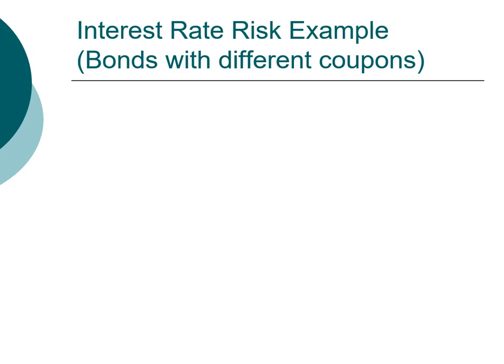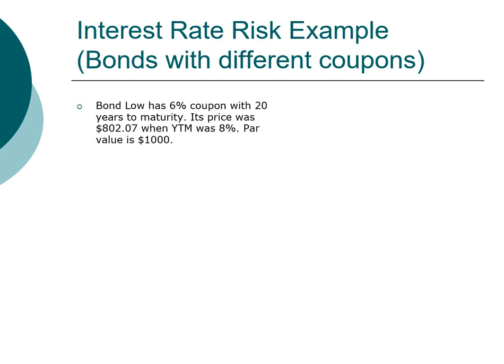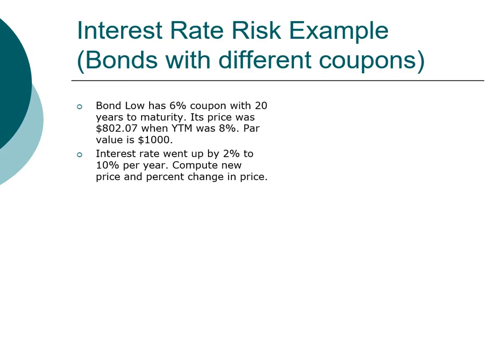Now let's examine the second hypothesis: that bonds with different coupon rates — specifically bonds with a lower coupon rate — carry a higher interest rate risk. We'll use two examples with bonds that are identical except for the coupon payment. Here is a low-coupon bond with 20 years to maturity, current price $802, yield to maturity 8%, and face value $1,000. Interest rate went up by 2% to 10% per year. Pause the video and compute the new price and percentage change.